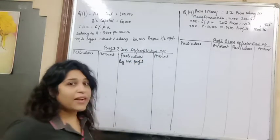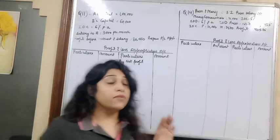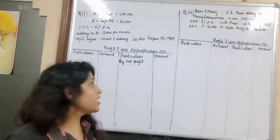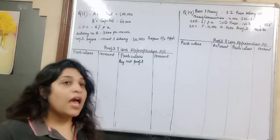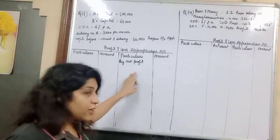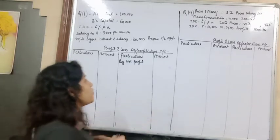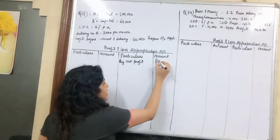Now, when I explained the format, I told you that from net profit we have to subtract certain things - that is interest on loan, rent, and manager's commission. If these three things are given, they will be subtracted. If not given, then net profit is taken directly. Net profit is 80,000.